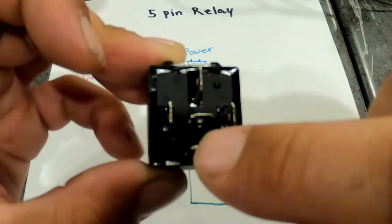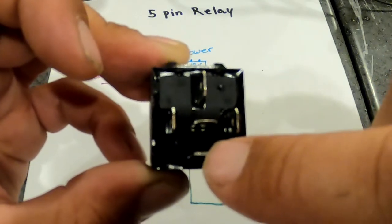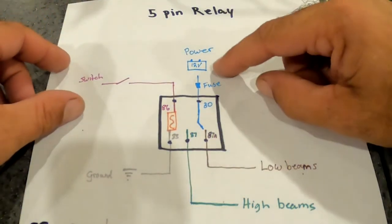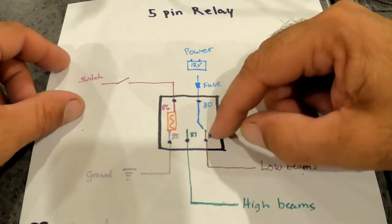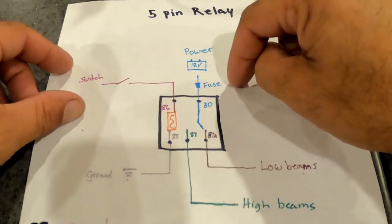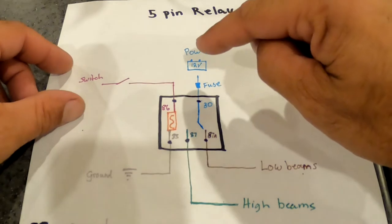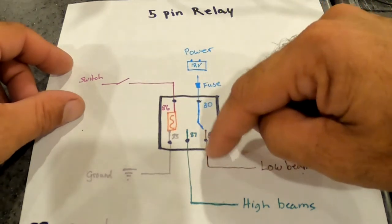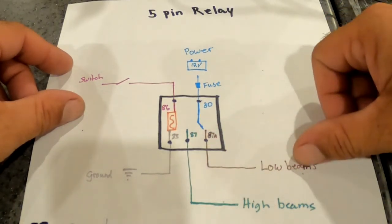Then, this one here is 87. This would go to your high beams, and I'll show you why. So, what we got is your power source. It comes in, and it automatically, when you turn the button on, if you have a switch, you turn your switch on to turn your lights on, it automatically has pin 87A hot. So your low beams automatically come on.